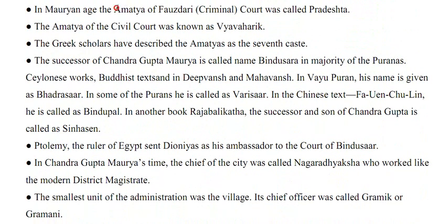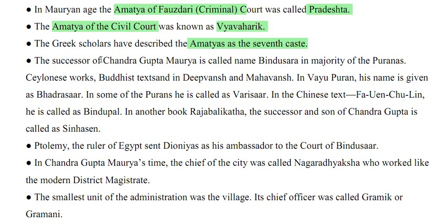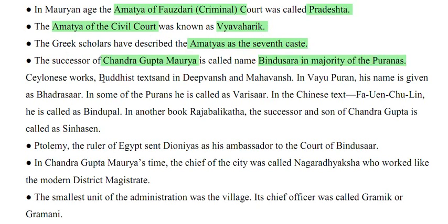The amatya of the civil court was known as Vyoharik, and of the criminal court was called Pradesh. The Greek scholars described the amatya as the seventh caste. The successor of Chandragupta Maurya is called Bindusar in majority of Puranas; in Vayu Puran his name is given as Bhadrashar; in the Chinese text Fawen Chuan Lin he is called Bindupal; and in another book Raj Balikath, the son of Chandragupta is called Sinha Sin.